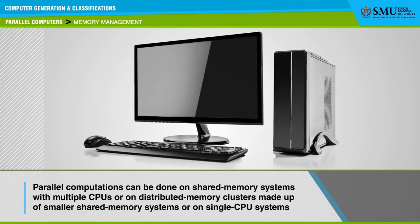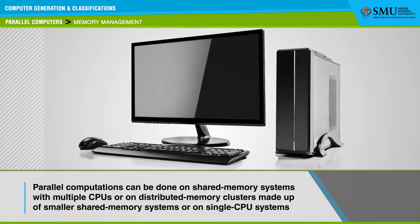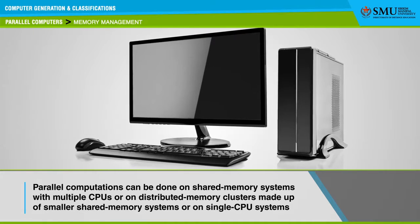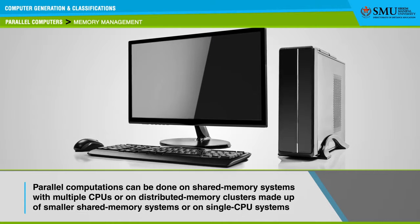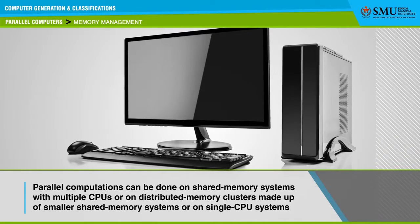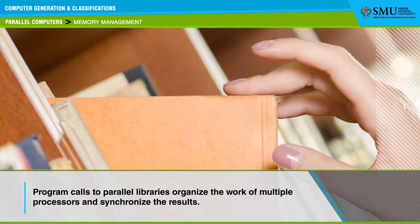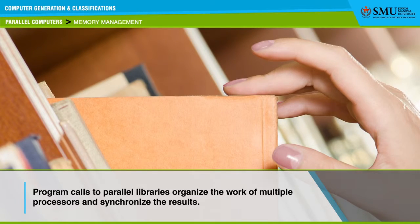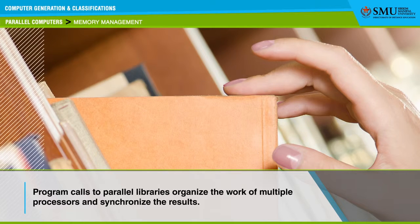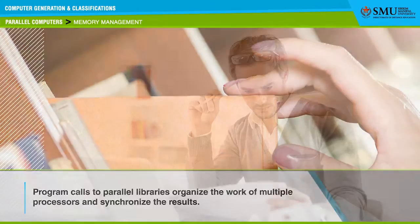Parallel computations can be done on shared memory systems with multiple CPUs, or on distributed memory clusters made up of smaller shared memory systems, or on single CPU systems. Program calls to parallel libraries organize the work of multiple processors and synchronize the results. These tasks are usually done by parallel programming experts.